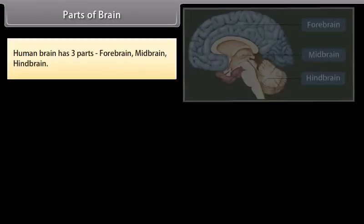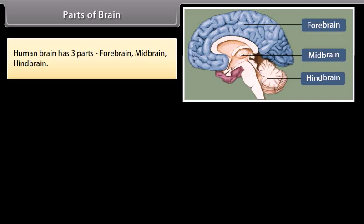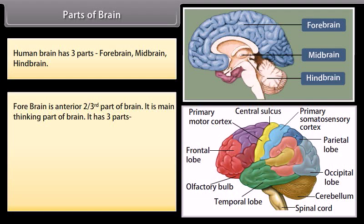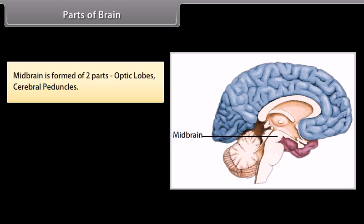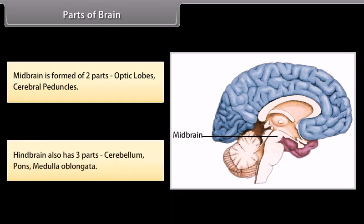The human brain has three parts: forebrain, midbrain, and hindbrain. The forebrain is the anterior two-thirds of the brain and is the main thinking part. It has three parts: the olfactory lobes (one pair, small-sized, club-shaped), the cerebrum (the largest part, about 80% of brain weight, with one pair of cerebral hemispheres each having four lobes — frontal, parietal, temporal, and occipital), and the diencephalon (made of thalamus and hypothalamus). The midbrain is formed of optic lobes and cerebral peduncles. The hindbrain has three parts: cerebellum, pons, and medulla oblongata.